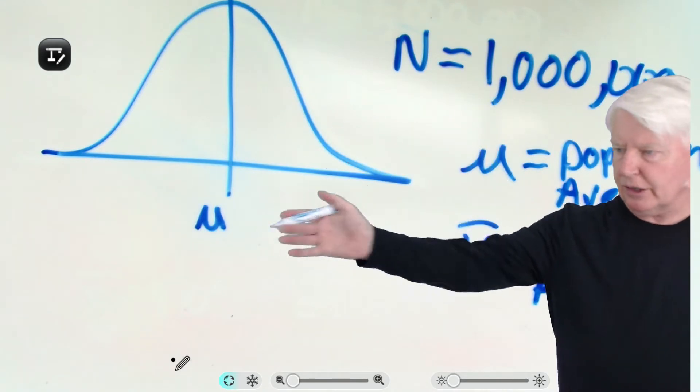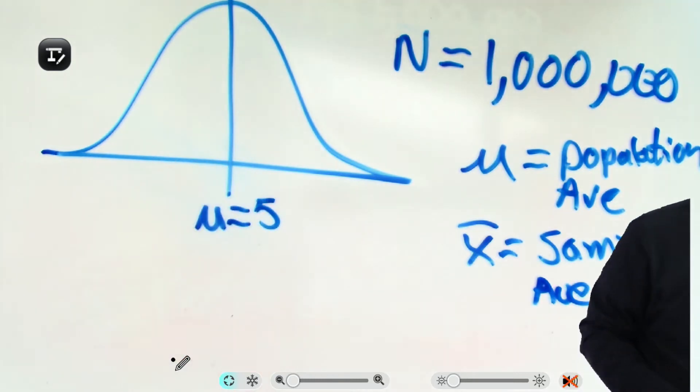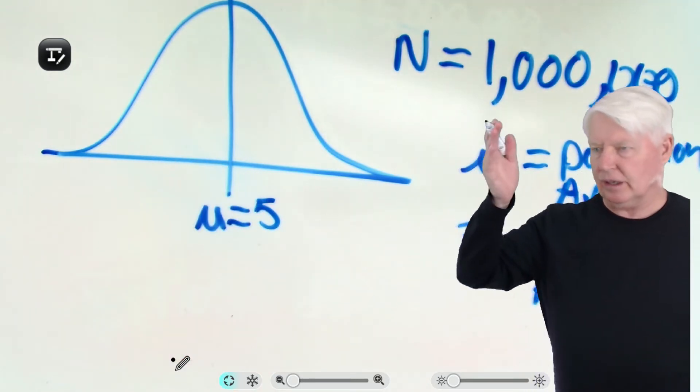So mu, we took all million parts, calculated the average, let's say for example it is 5. Now that obviously took a long time.